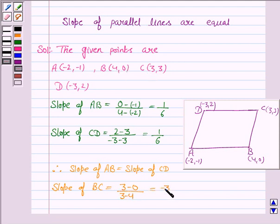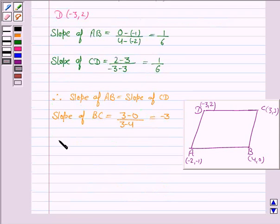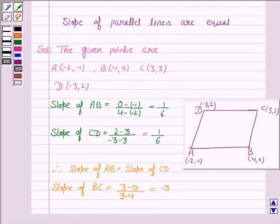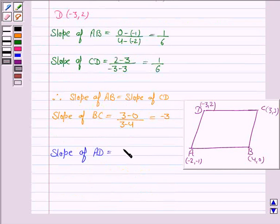Now, we find slope of AD. Slope of AD is given by [2 - (-1)]/[-3 - (-2)], and this is equal to -3.